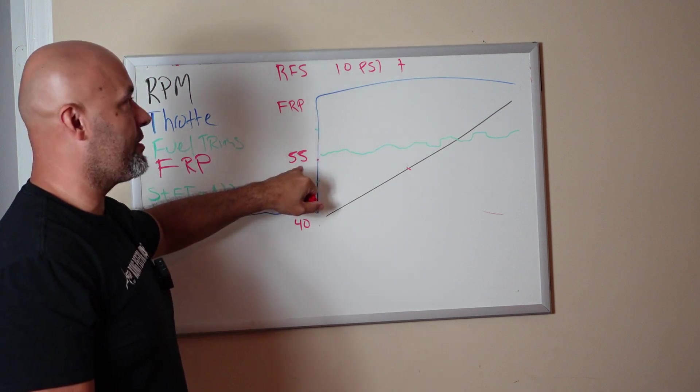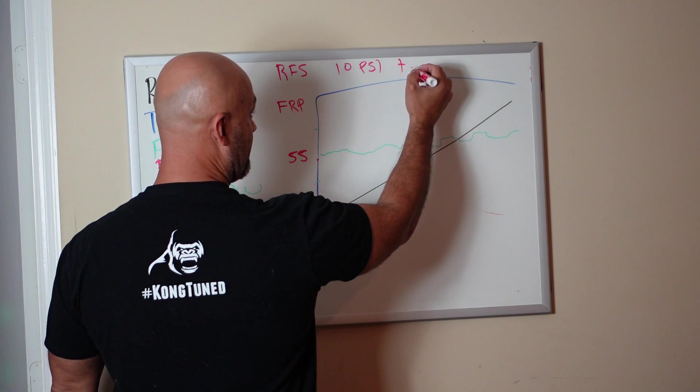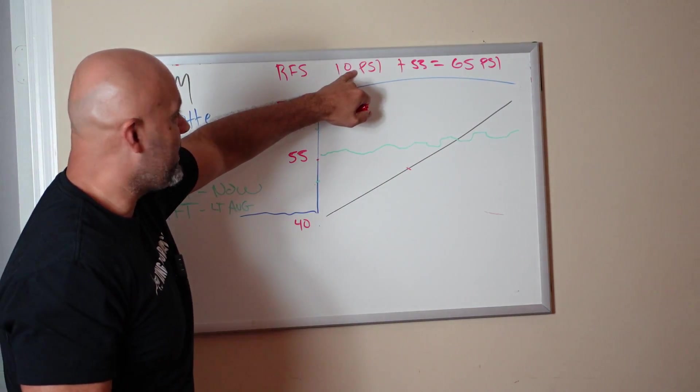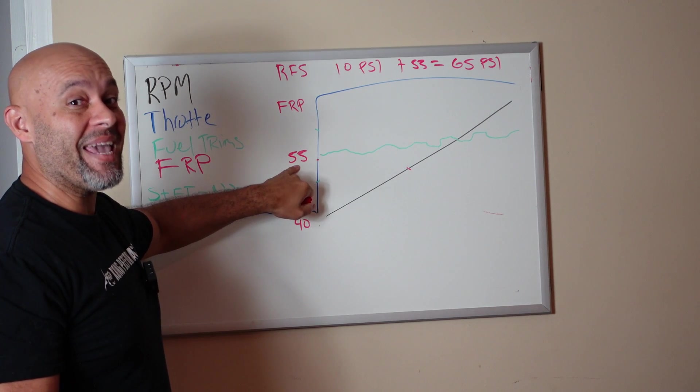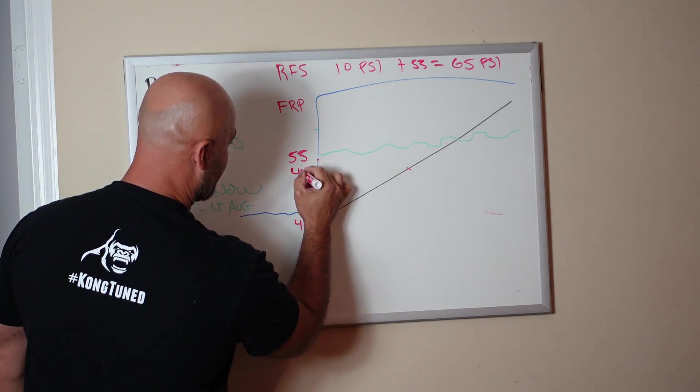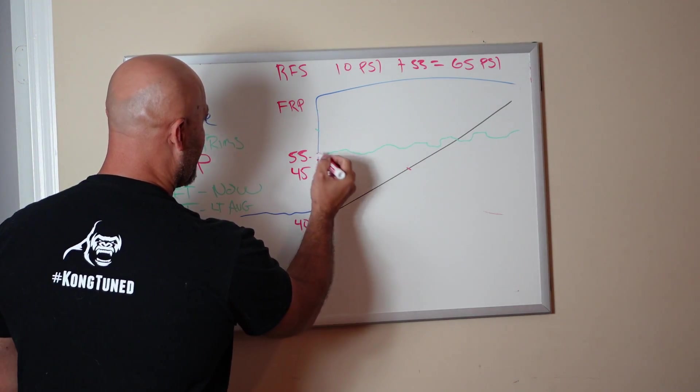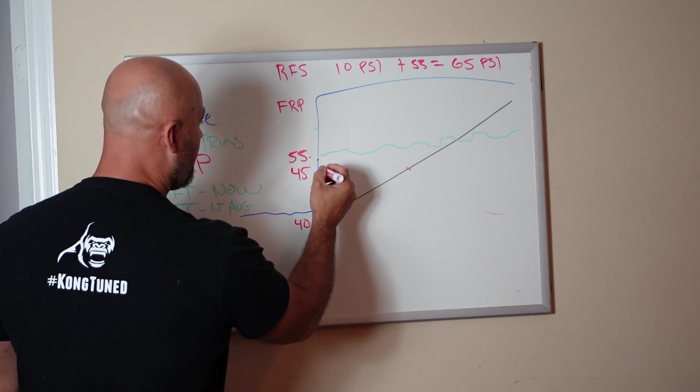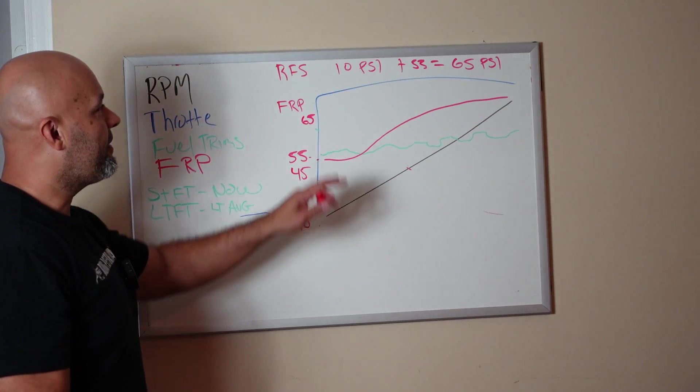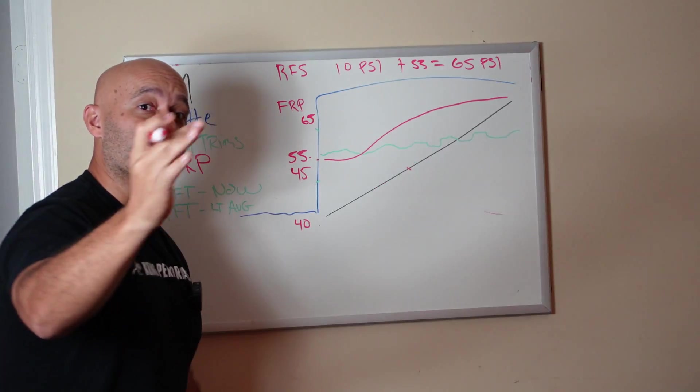How much pressure should I see at wide open throttle in the fuel rail pressure sensor with 10 psi? If it's boost referenced properly, 55 plus 10 equals 65 psi. If I have 10 psi on a 55 psi base with a boost vacuum reference, which usually drops to 45 psi at idle because of the vacuum, once you give it a little gas, boom, it comes back up to 55. At boost, fuel rail pressure should go up.